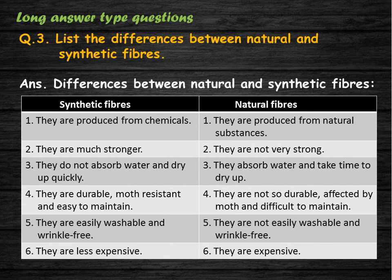List the differences between natural and synthetic fibers. Synthetic fibers are produced from chemicals, whereas natural fibers are produced from natural substances. Synthetic fibers are much stronger and do not absorb water, drying quickly, while natural fibers absorb water and take time to dry. Synthetic fibers are durable, moth-resistant, easily washable, wrinkle-free, and less expensive compared to natural fibers, which are not so durable, affected by moths, and difficult to maintain.